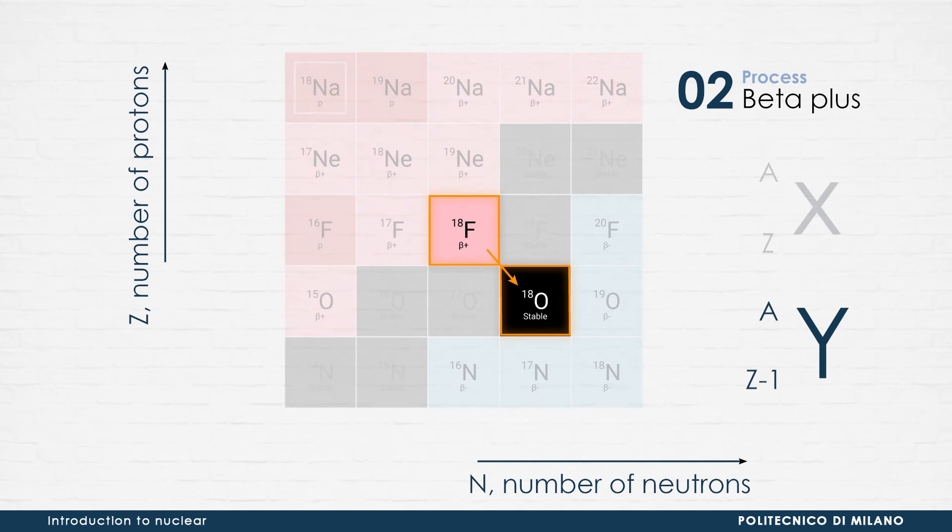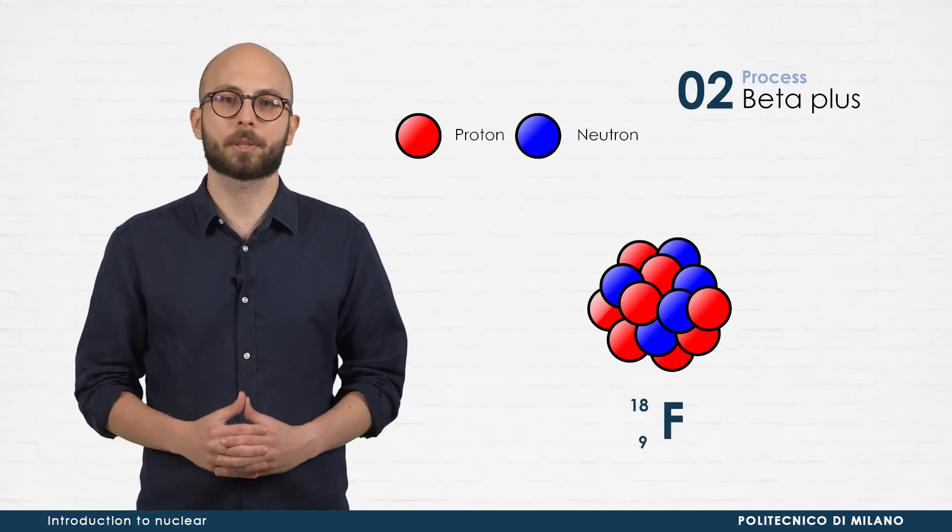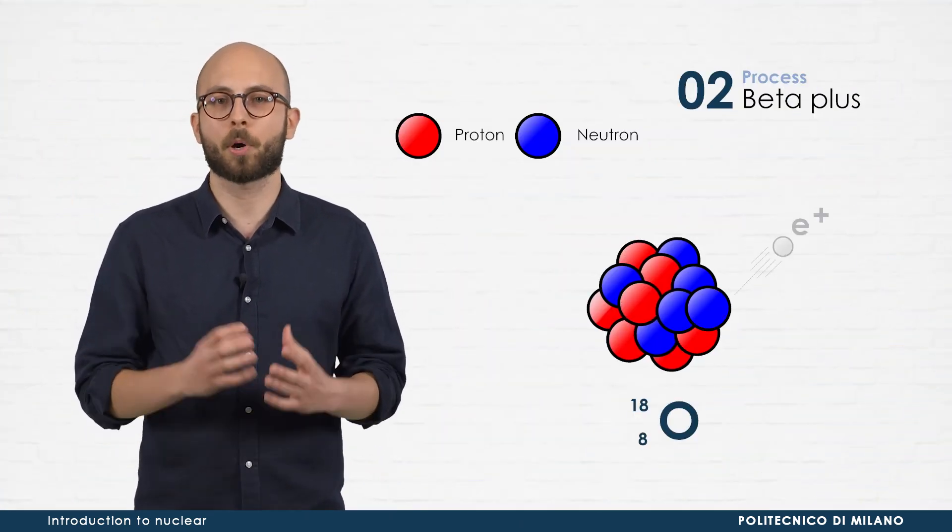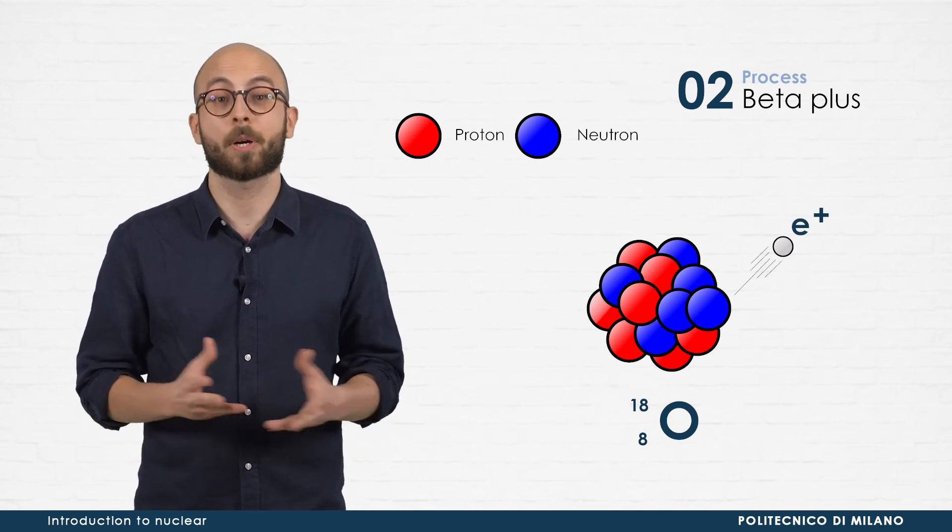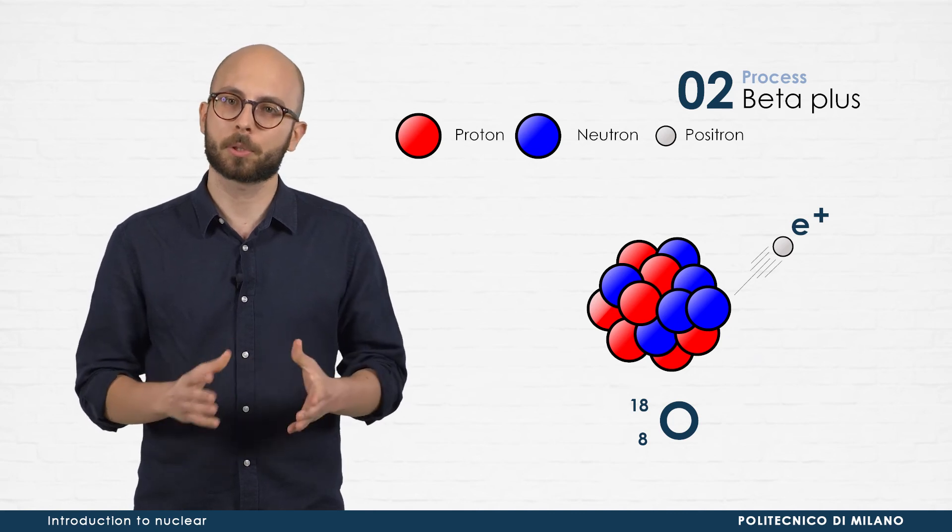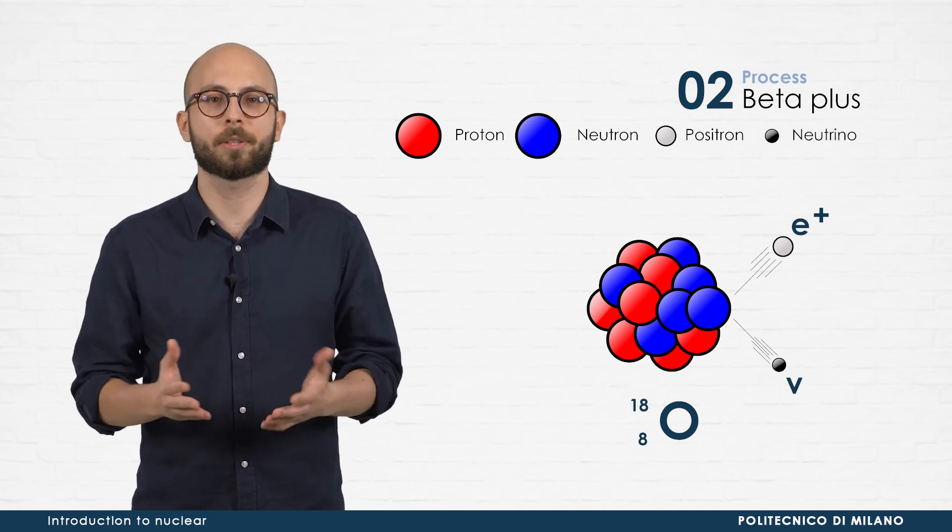For example, fluorine-18 decays into oxygen-18. The charge variation is compensated by the creation of a positively charged electron, a sort of anti-electron, called positron. Also, the creation of an antiparticle comes with the creation of a particle, called neutrino.